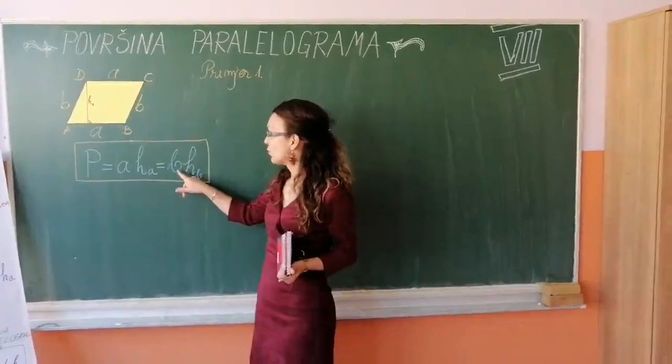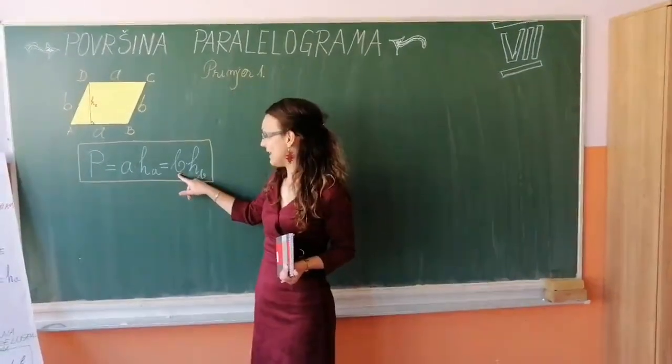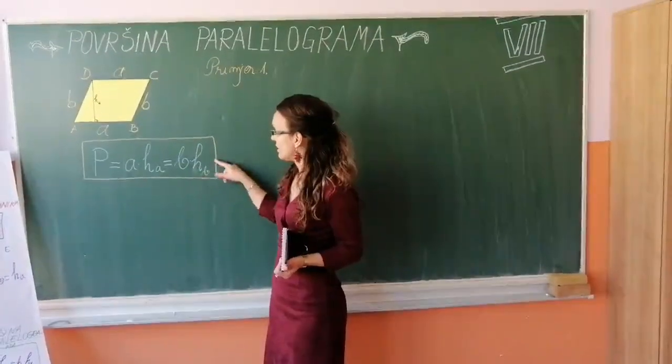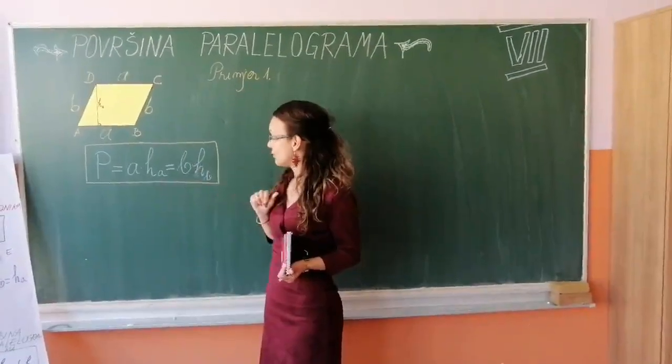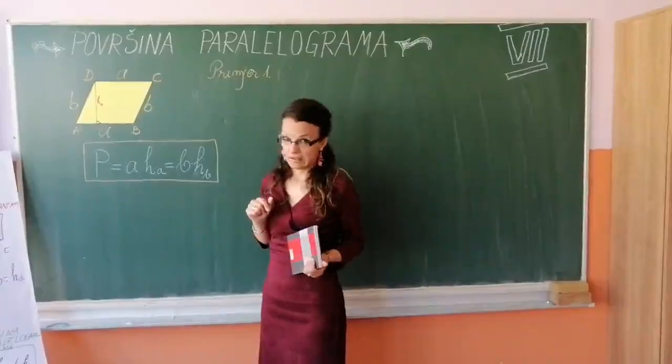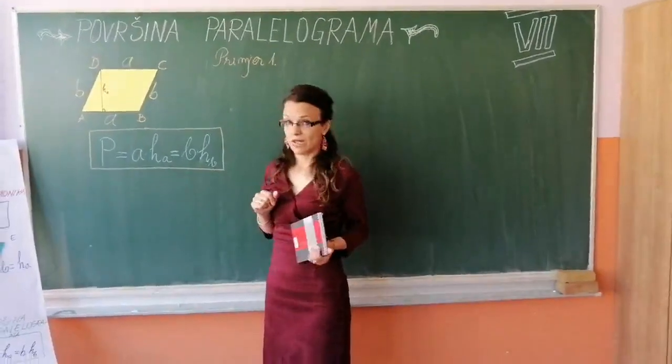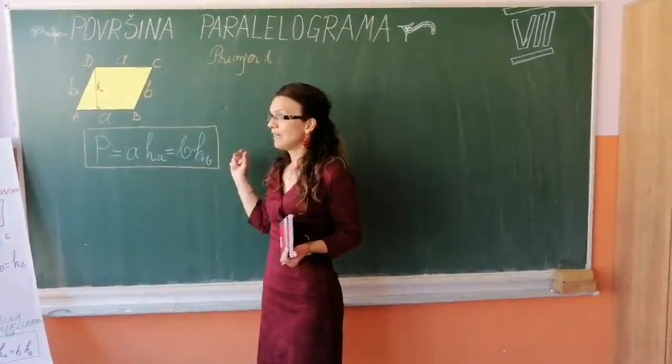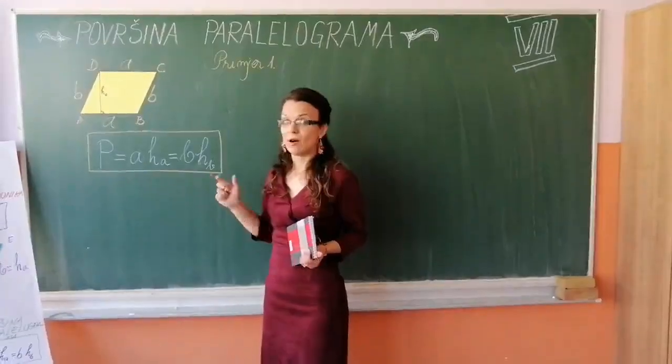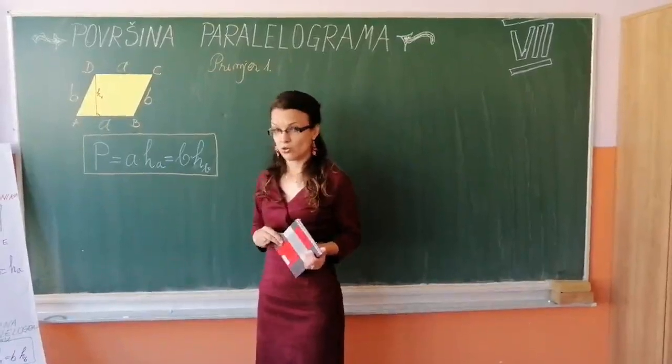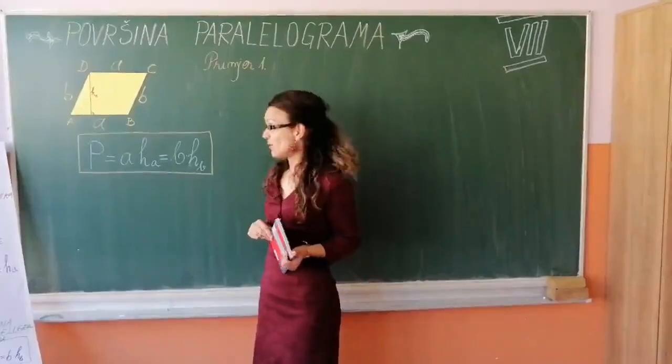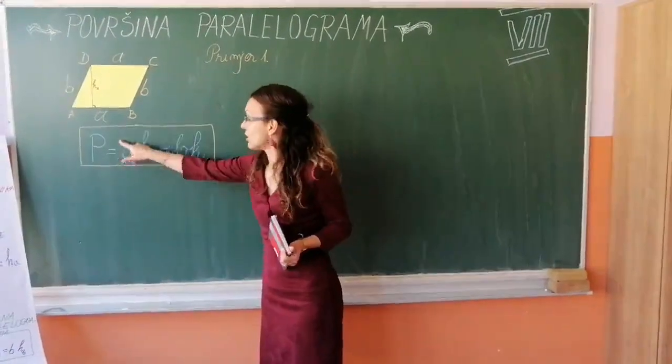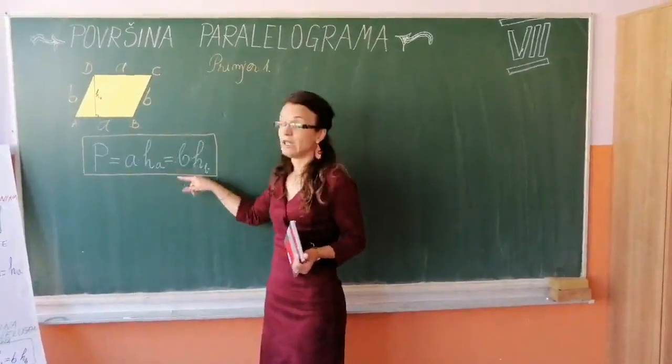Međutim, ukoliko u zadatku imamo ostalo stranicu B i visinu koja odgovara toj stranici, onda ćemo koristiti obrazac B puta hb. Nekada će se desiti situacija, primjer vidjet ćete, u jednom zadatku imati i dio jednih i dio drugih podataka, a onda treba iskoristiti onu činjenicu da jednost površine će biti ista, ako je pitam jedan isti paralelogram, koristili bi formulu jednu ili drugu.